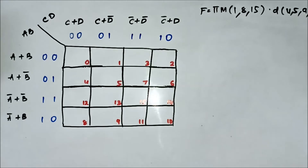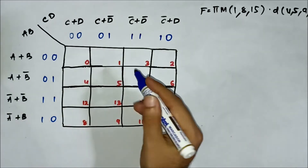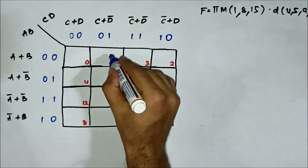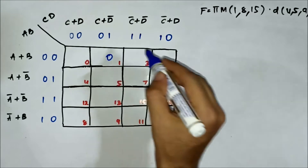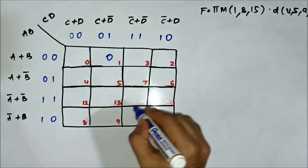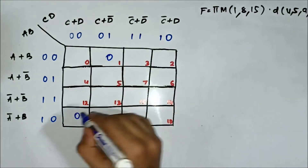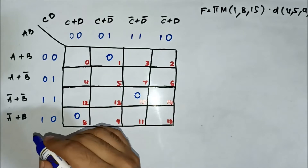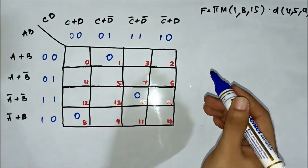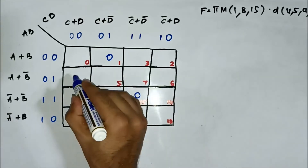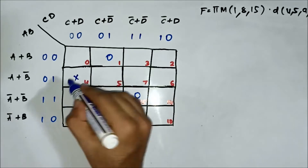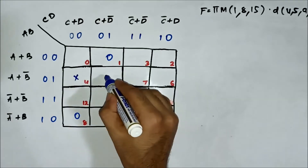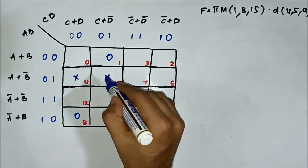The max term values are 1, 8, and 15. The don't care values are 4, 5, 9, and 14.